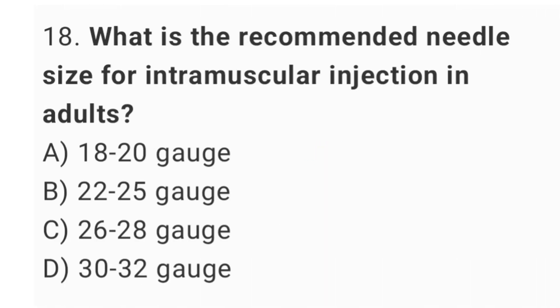Question number 18: What is the recommended needle size for intramuscular injection in adults? The right answer is option B: 22 up to 25 gauge.